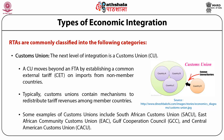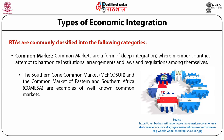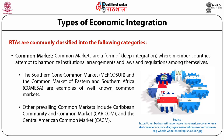Some examples of customs unions include the South African Customs Union, the East African Community Customs Union, the Gulf Cooperation Council, and the Central American Customs Union. Common markets are a form of deep integration where member countries attempt to harmonize institutional arrangements, laws, and regulations. While all features of a customs union are present, a common market also provides for free movement of factors of production among member countries in addition to the free flow of products. Examples include the Southern Common Market and the Common Market of Eastern and Southern Africa, as well as the Caribbean Community and Common Market and the Central American Common Market.